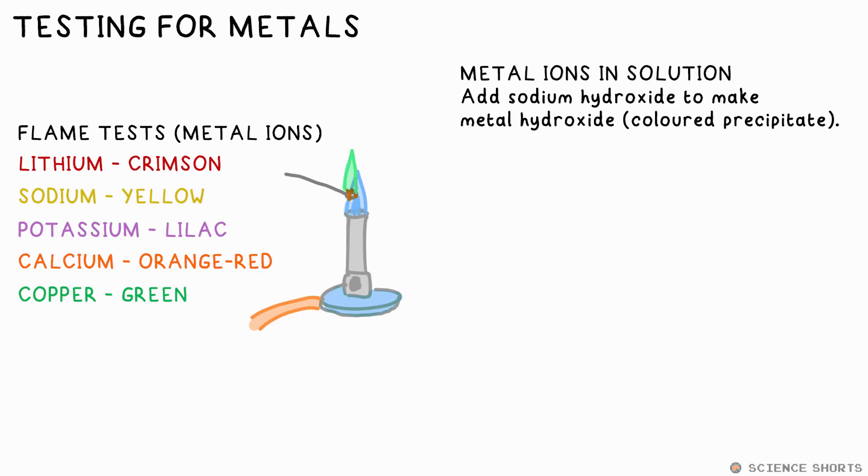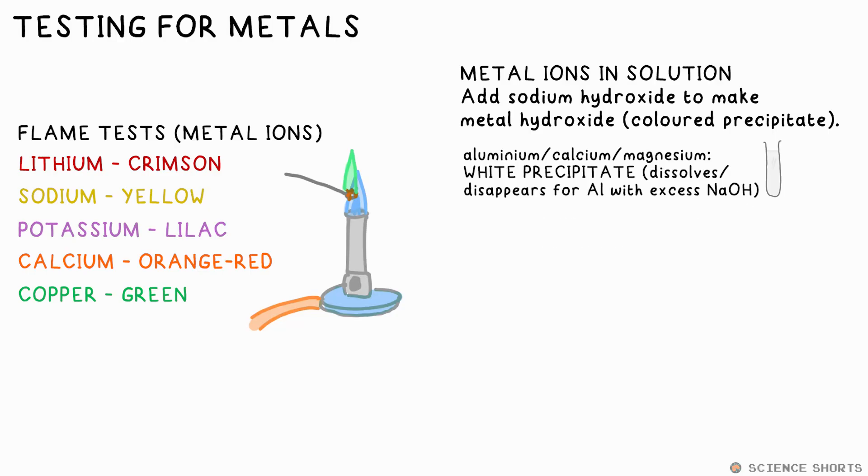We can also test for some metals in solutions by adding sodium hydroxide. If aluminium, calcium, or magnesium are in the solution, a white precipitate will be formed. However, if it's aluminium, the aluminium hydroxide produced will then dissolve if excess sodium hydroxide is added. Copper two ions - that is Cu2+ ions - form a blue precipitate, iron two green precipitate, iron three brown.